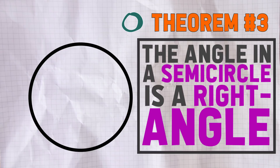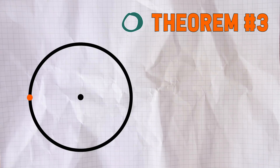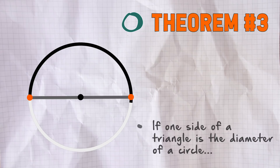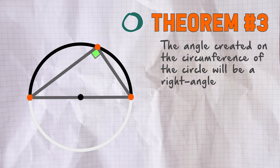Theorem number three: the angle in a semi-circle is a right angle. So if we have a triangle where one of the sides of the triangle is the diameter of the circle, just like we've got there, then the angle created at the circumference will always be a right angle.